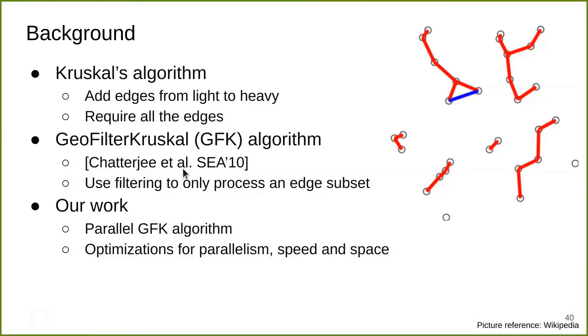In 2010, Charley et al. proposed a GeoFilter-Kruskal algorithm based on Kruskal's algorithm to solve the Euclidean MST problem. They used a filtering technique to only process a subset of the WSPD edges, which is more efficient. For our work, we propose a parallel GeoFilter-Kruskal algorithm and propose optimizations for parallelism, speed, and space. We use this algorithm for both Euclidean MST and HDBSCAN.